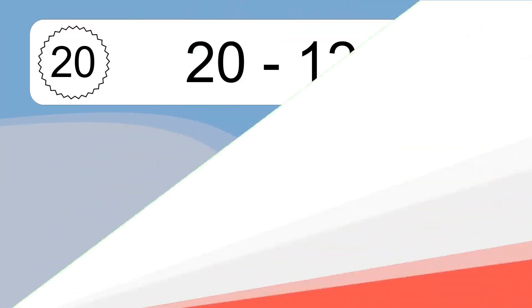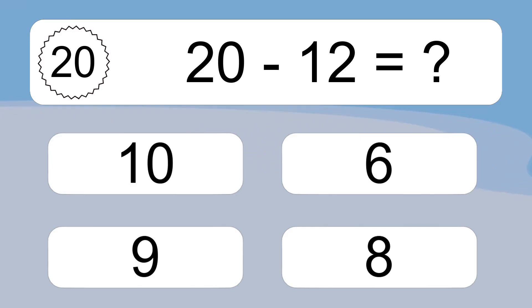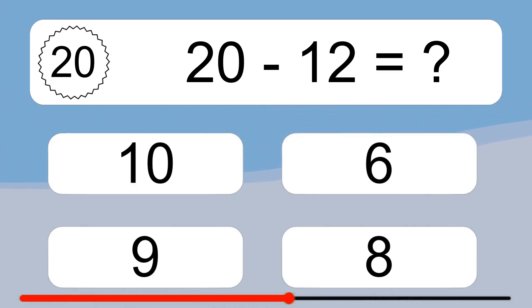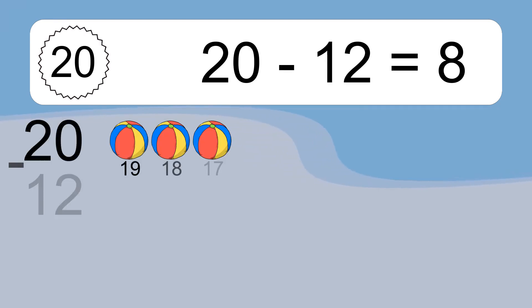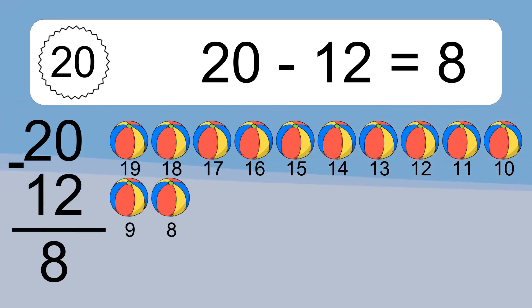20 minus 12 equals what? 20 minus 12 equals 8. Let's count it. 19, 18, 17, 16, 15, 14, 13, 12, 11, 10, 9, 8.